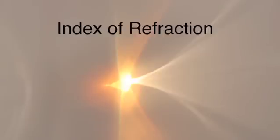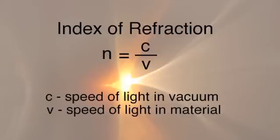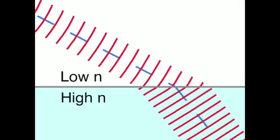We define this as the speed of light in vacuum divided by the speed of light in the material. The more the light interacts with the material, the slower it travels, and the higher the index of refraction. For example, the index of refraction of glass is about 1.5, meaning light travels 1.5 times slower in glass than in vacuum.